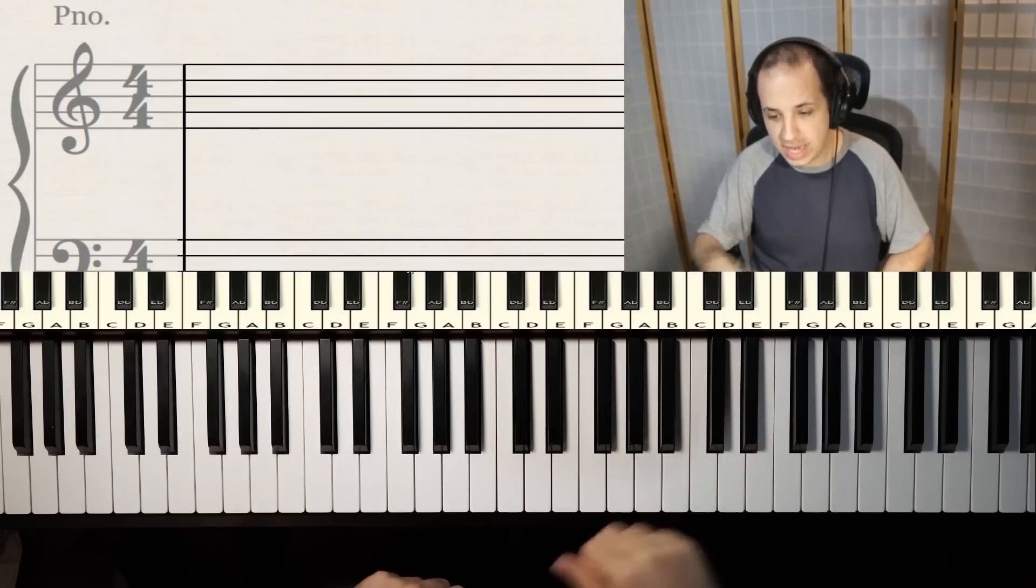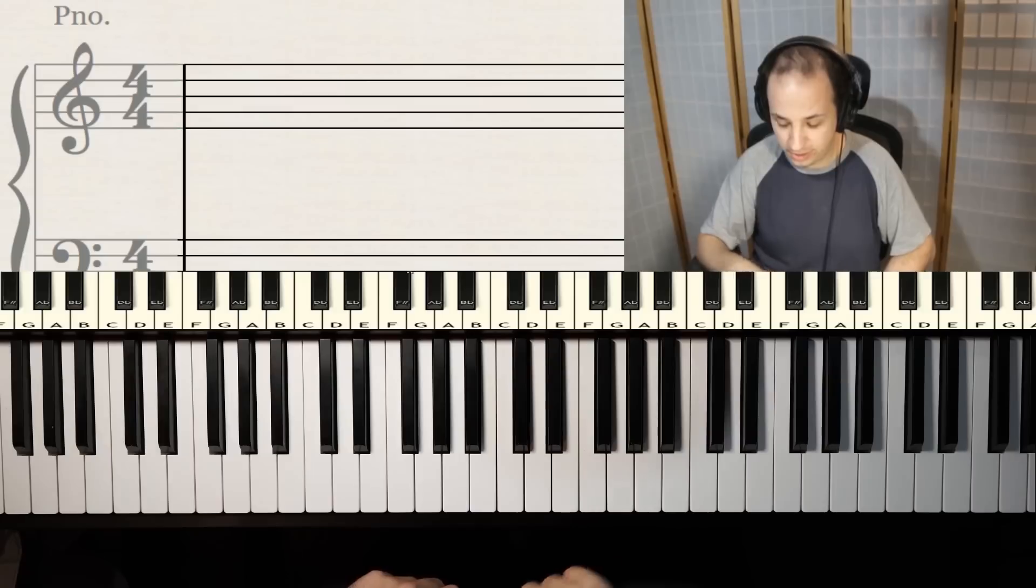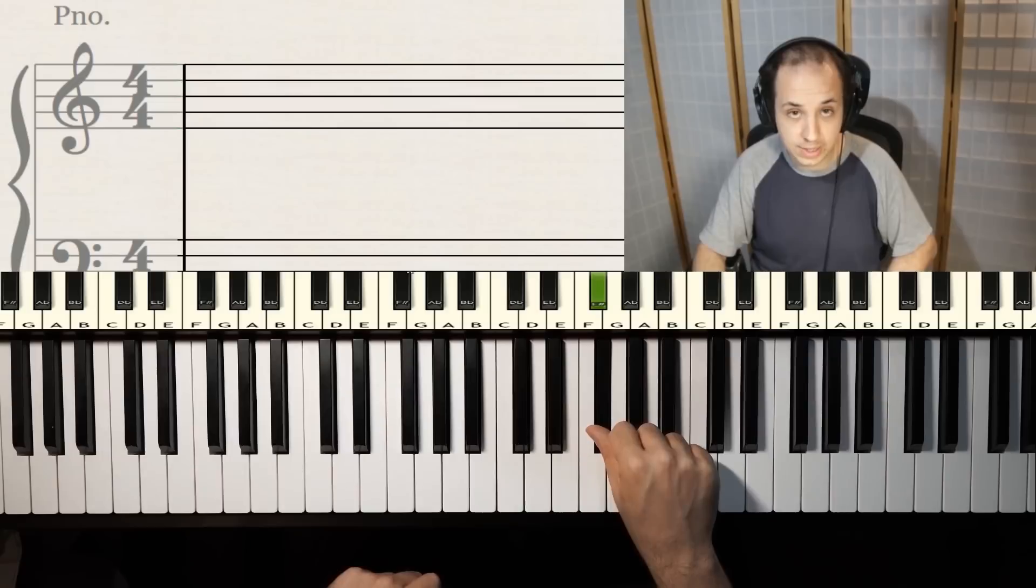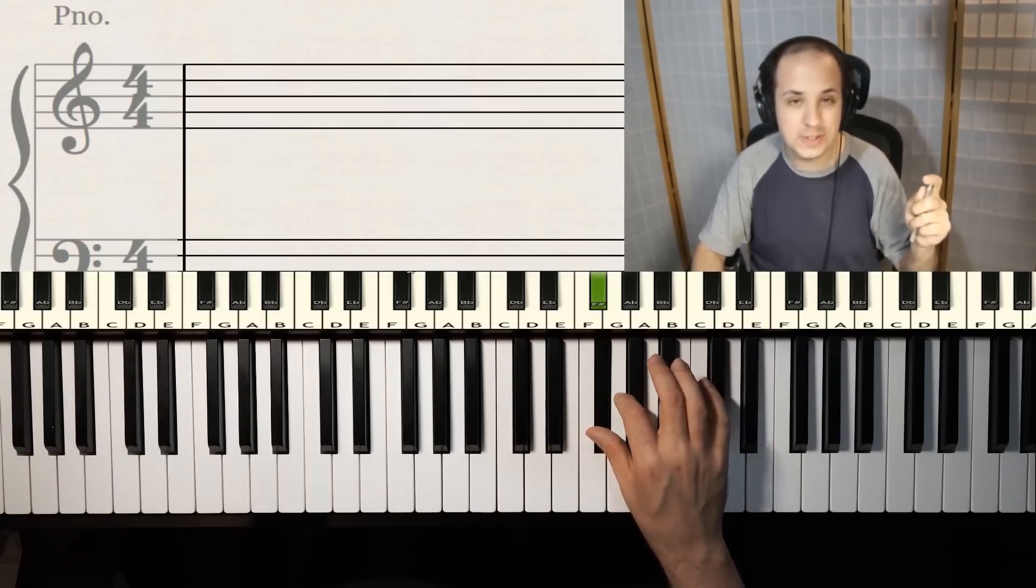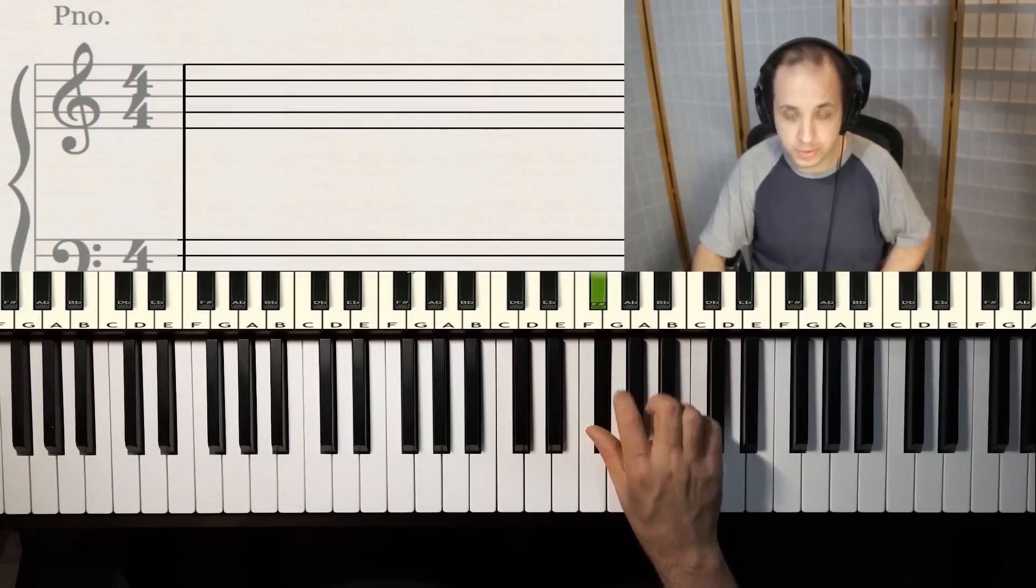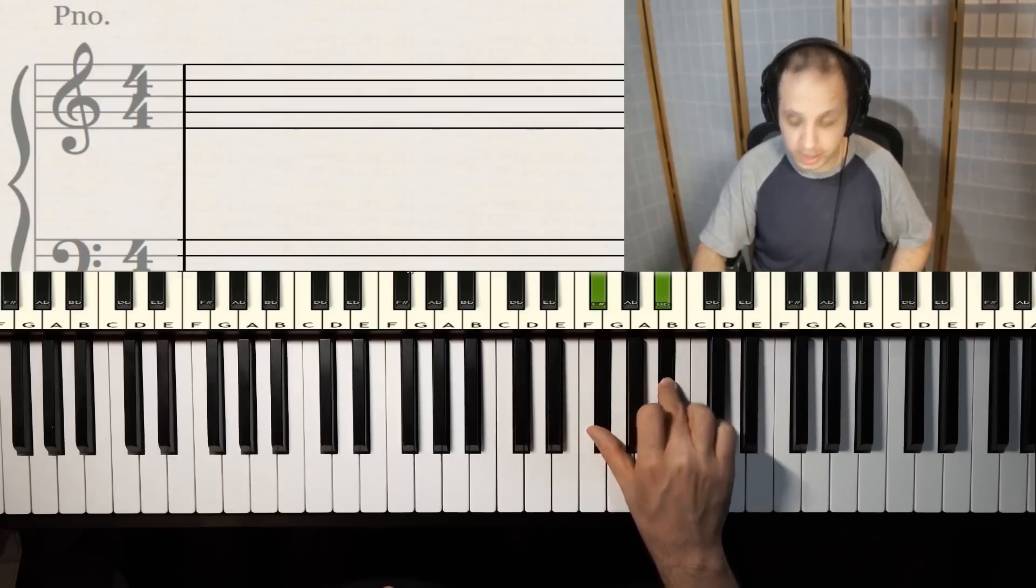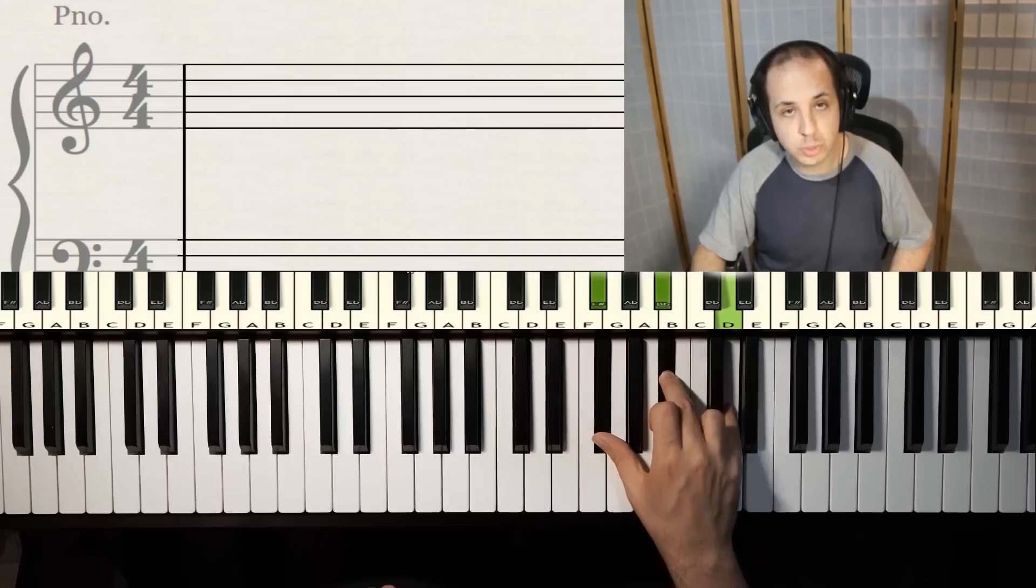So say we have an F-sharp augmented chord, that is a tricky one. So you have F-sharp, that's your first step. Next, you have to count up how many half steps. Leave it in the comments if you want to, or just write it down. And then what you wanna do is you wanna go up four half steps. Remember the formula is four and four. One, two, three, four, and then you go up four again. One, two, three, four, play them, and let's see what we have.